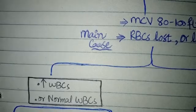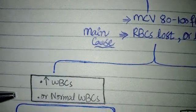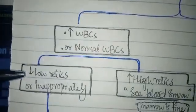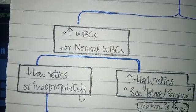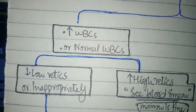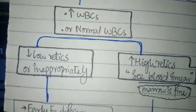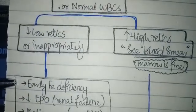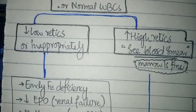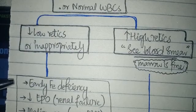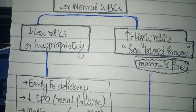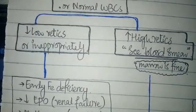Upon checking the reticulocyte count, if it is low or inappropriately low, it can be due to a number of causes such as early iron deficiency. If you don't get enough iron in your body, or if enough iron is lost due to various reasons, it can lead to early iron deficiency, low reticulocytes, and normocytic anemia.